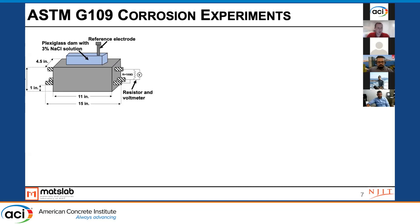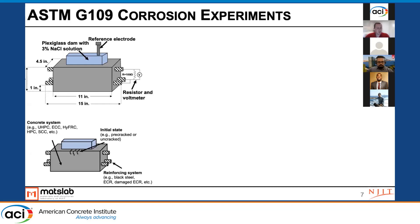The way we're running through the experimental program is using ASTM-G109. This is an experimental setup where there are two layers of reinforcement and a sodium chloride solution placed on one surface. Over time, we're measuring the corrosion current throughout the testing program. Basically every two weeks, that dam gets filled up with sodium chloride solution and then removed. We're looking at a few different things: different types of concrete systems, whether or not there is pre-cracking in a system and how that can accelerate the corrosion process, and different types of reinforcing systems — for example, black steel, epoxy-coated reinforcement, or damaged epoxy-coated reinforcement.